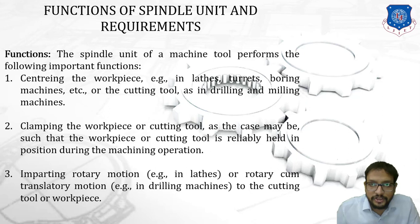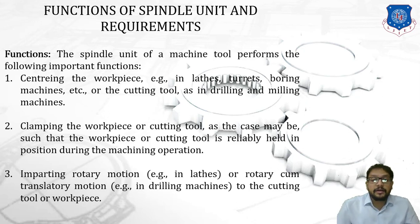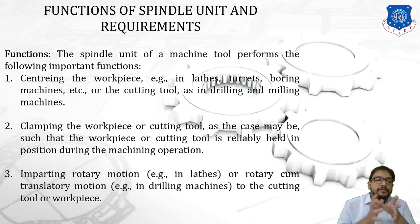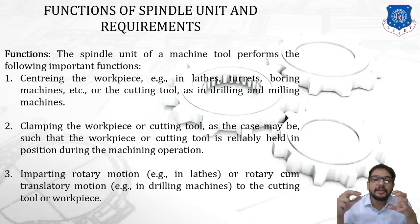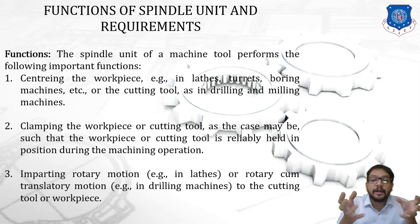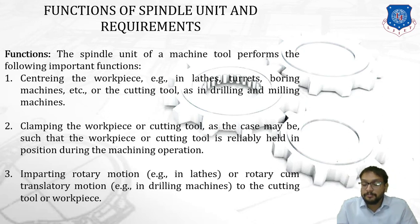Next is clamping the workpiece or a cutting tool, such that the workpiece or cutting tool is reliably held in position during a machining operation. Various clamping devices are mounted within the spindle — the spindle is basically hollow. Within the spindle we place various centers; chucks are mounted on a spindle, and mandrels are used for holding hollow workpieces.